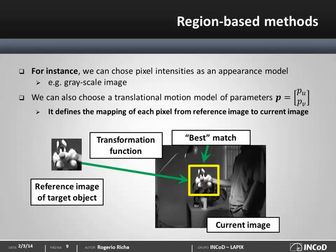For instance, let's assume that my target object in this example is this plush toy. I can choose to represent it as a grayscale image. And assuming that it only moves in the horizontal and vertical directions, we can track its motion using a translational model. And to find the parameters of this translational model, we can exhaustively search the current image to find the parameters which maximizes, for instance, the sum of square differences between the reference and current images.